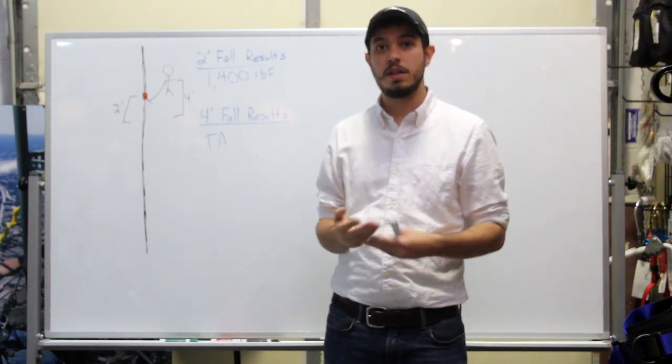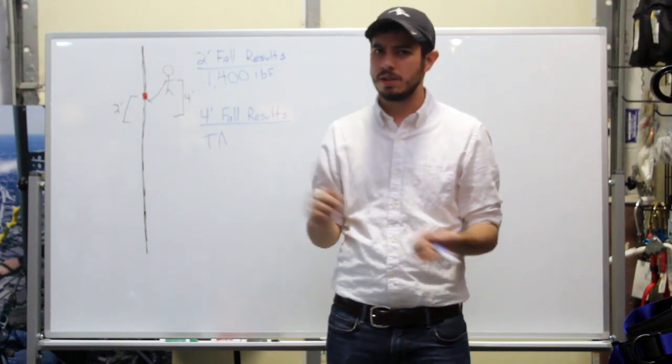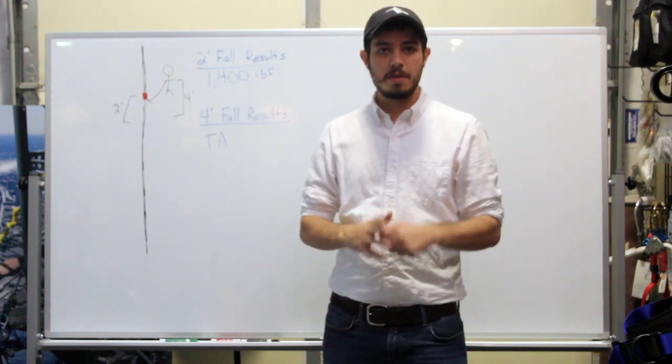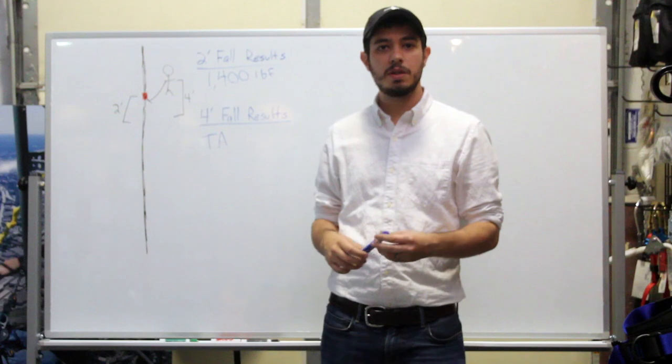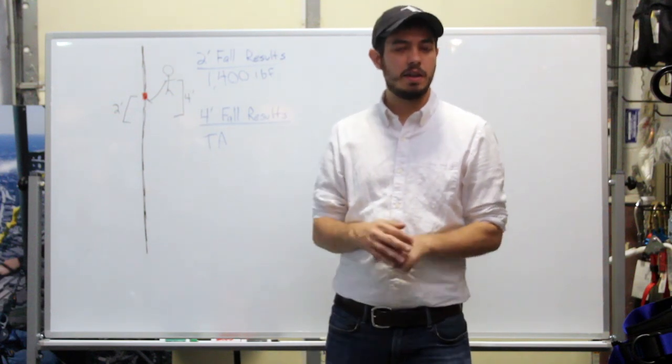But I think we've just shown here, clearly you should be planning ahead and not using your hand ascender as a backup device. There's lots of great backup devices out there, Petzl ASAP, ISC Rocker, Camp Goblin, tons more. So check those out. Thanks for watching. And let us know in the comments what you thought, and any other testing you want to see. Thank you.